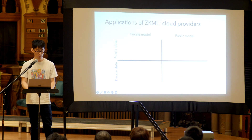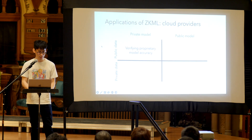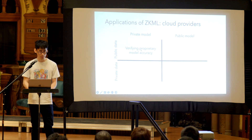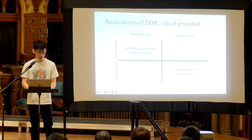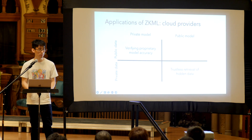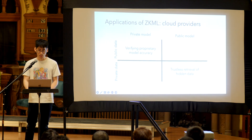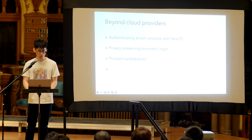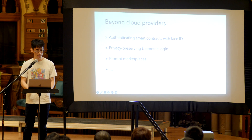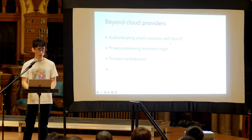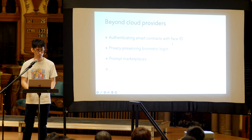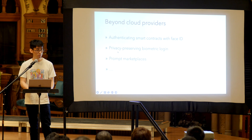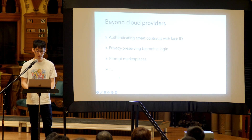Just to briefly touch on some applications of ZKML: if you have public data and a private model, you might want to verify a proprietary model's accuracy; if you have a public model and private data, you can do trustless retrieval of hidden data, for example in a legal subpoena. Beyond cloud providers, you could imagine authenticating smart contracts with Face ID — this is actually possible today. You can also imagine privacy-preserving biometric login, prompt marketplaces for generative AI, and a whole host of other applications.